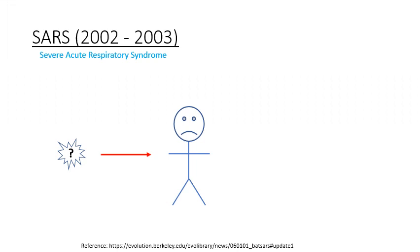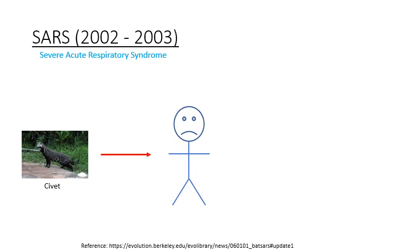Let's talk about Severe Acute Respiratory Syndrome, or SARS. This disease originated in Guangdong Province of China back in 2002 and 2003. The culprit is a virus belonging to the coronavirus family. Initially it was thought that the virus was transmitted from civets to humans — civets are cat-like animals eaten in some parts of China. In live animal markets, civets showed the same influenza-like symptoms as SARS patients.